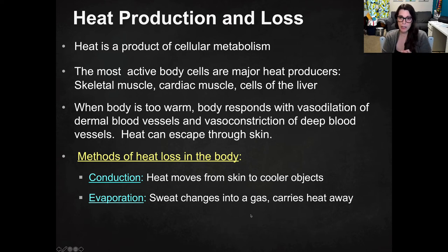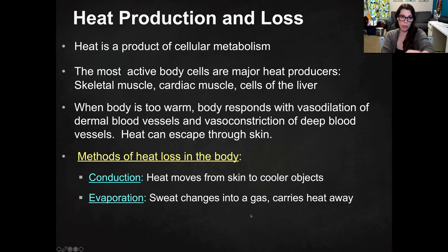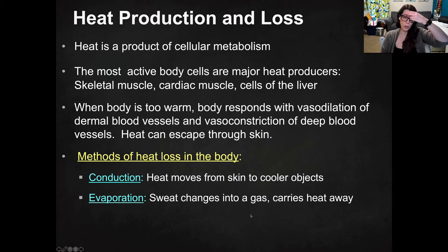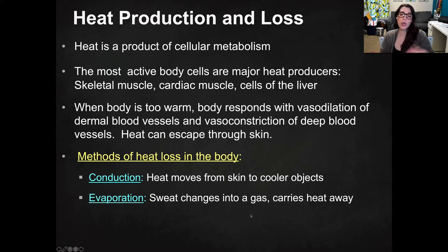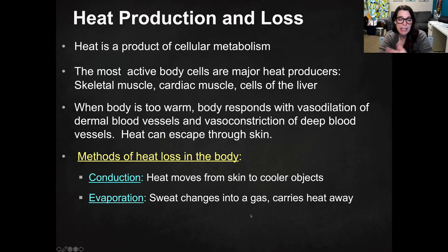When your body is too warm, you're going to respond with vasodilation — "vaso" means vein and dilation means to enlarge — so vasodilation means your veins are going to open up and get bigger. That happens in your dermal and skin blood vessels. Vasoconstriction is the opposite: when they constrict and get smaller in your deeper blood vessels. When you're warm, dilating the blood vessels at your skin allows more blood flow to pass closer to the skin. When you're cold and need to bring heat into your core, those blood vessels constrict and pull blood back toward your core.